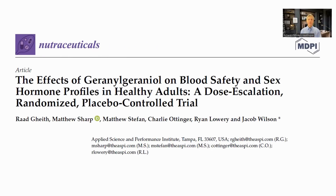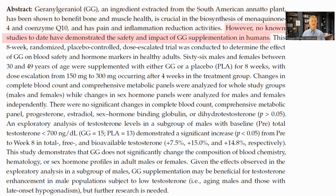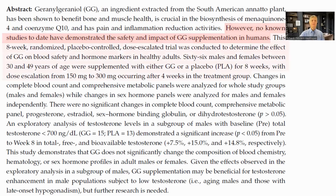GG has not been greatly studied, but let's have a look at some of the data. We'll start with the clinical trial paper that was recently published. Note that the benefits may be clearer in the case of a person taking statins. GG is extracted from the Annatto plant, a native of South America — the same plant which provides the delta-tocotrienol version of vitamin E. It has been shown to reduce pain and inflammation in preclinical trials. However, there have not been safety trials in humans. So this was an eight-week randomized controlled trial with two doses — 150 milligrams and 300 milligrams — taken orally.